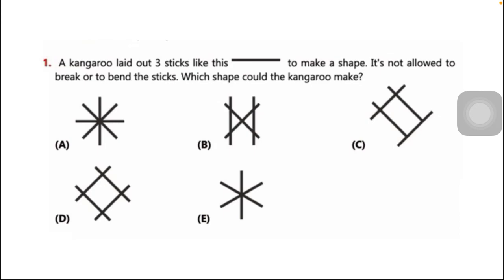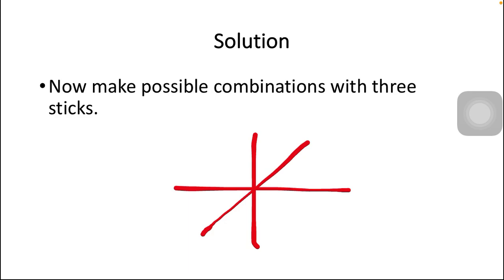What you have to do is to make possible combinations from the three sticks. Let's move to the solution. The first possible combination is this one. What I have done here is these two sticks are making a plus sign and the third one is just crossing them through a single point.